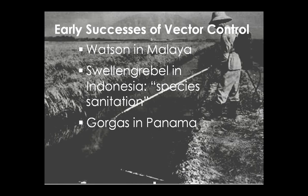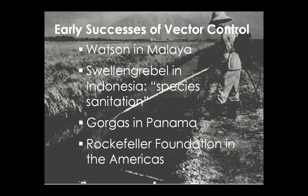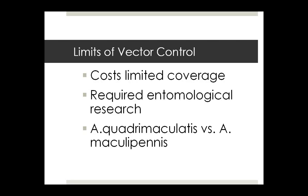Later, William Gorgas in Panama eliminated both yellow fever and malaria using vector control methods, highly successfully. Then the Rockefeller Foundation engaged in vector control efforts in the Americas. But vector control was very costly, and because of the costs, it was often limited to places of industrial production, plantations, or urban areas, leaving large areas unprotected. It also required detailed entomological knowledge to define specific species and their breeding areas.